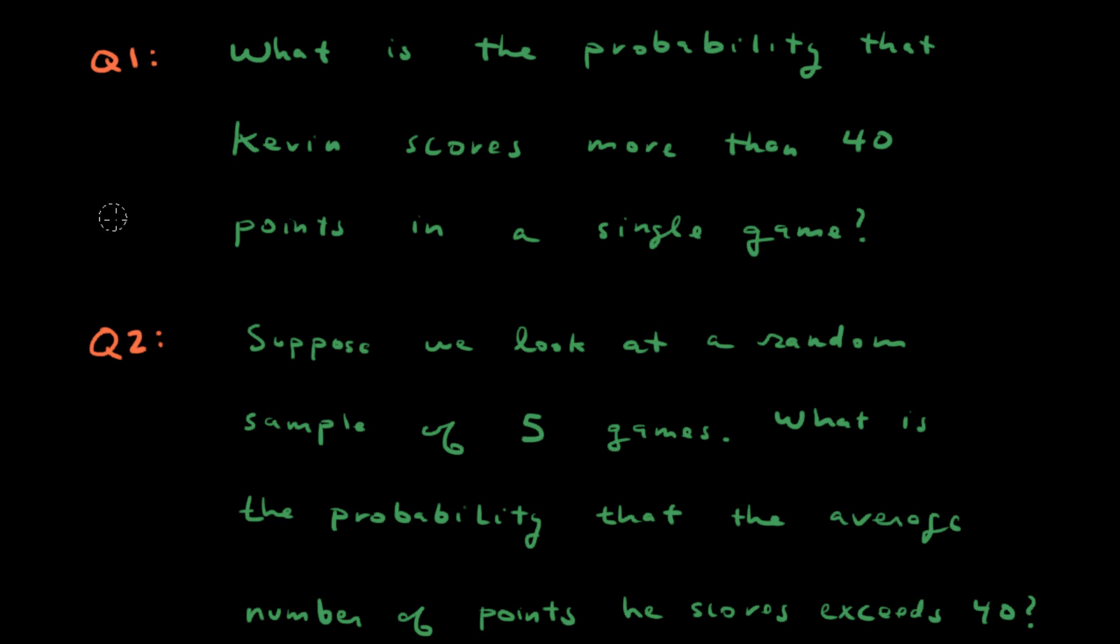The difference between these two questions is in question one, we're looking at a single game. In question two, we're looking at a sample of five games and we're looking at the average of points in those five games. So here we're just looking at one observation. Here we have five observations, we're taking the average of those five observations, and we want to know if that average exceeds 40.